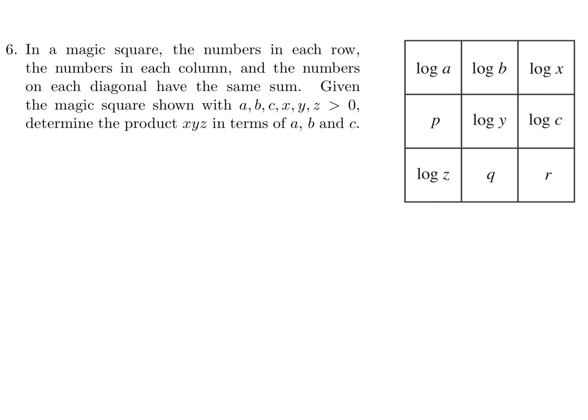In a magic square, the numbers in each row, the numbers in each column, and the numbers in each diagonal have the same sum. Given the magic square shows ABC, XYZ, all greater than 0, determine the product XYZ in terms of ABC. Well, many approaches here. I'm trying to think which approach is correct. Let's just go with, let's go the top row.